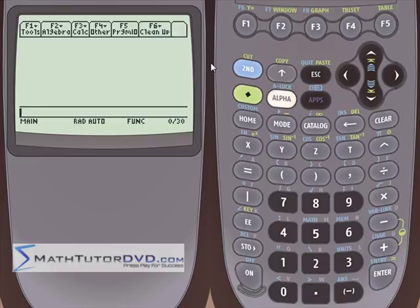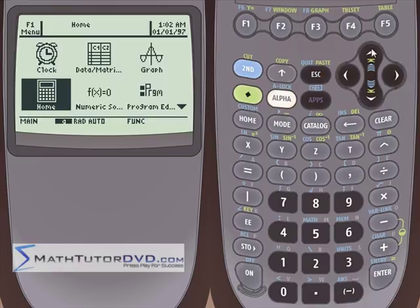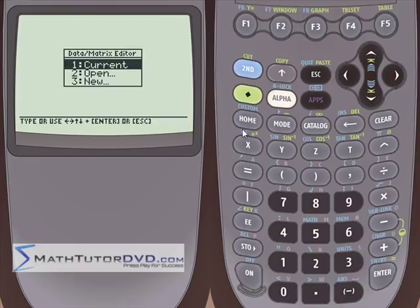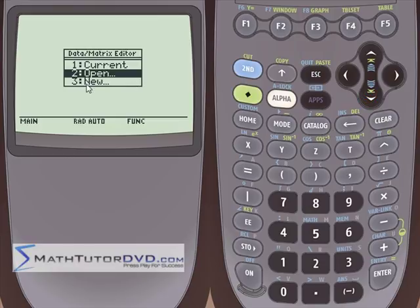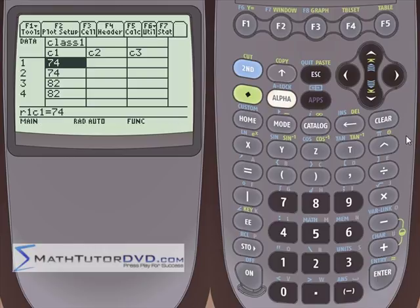So what we need to do to plot this histogram is to basically go first into the mode menu and make sure we're in function mode, which we are. Let's go ahead and quit that. Next we need to go open our data. So go to data matrix and we want to open our data set, G for grades. We already did that a minute ago so we'll open that up and we see we'll have lots of grades here.